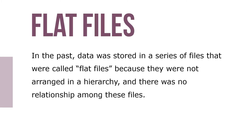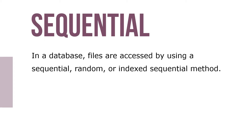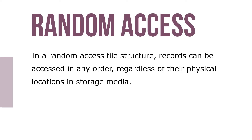In the past, data was stored in a series of files called flat files, because they were not arranged in a hierarchy and there was no relationship among these files. In a database, files are stored by using a sequential, random, or indexed sequential method. In a random access file structure, records can be accessed in any order regardless of their physical location in storage media.